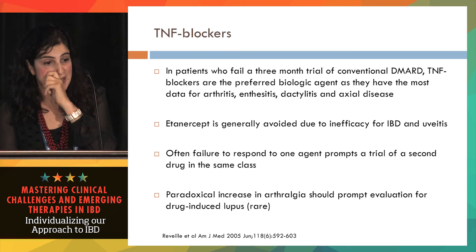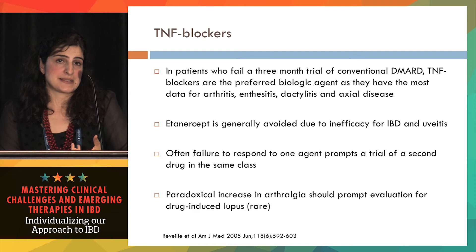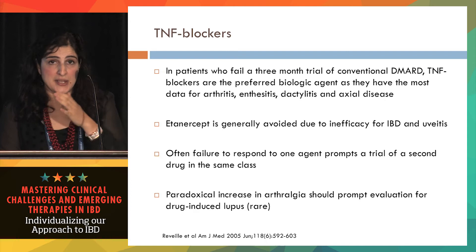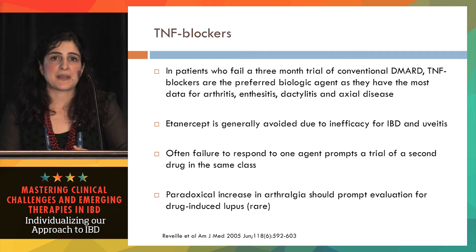What we like to use in patients with IBD arthropathy are TNF blockers, because we have the most positive data for these agents and they've been around for a long time. They're our go-to drug in axial disease and also have data for dactylitis, enthesitis, and arthritis — all the different domains showing good response rates in trials. We don't use etanercept in IBD because it doesn't seem to work for IBD, and it also doesn't work for uveitis, which we run across in patients with IBD and joint pain from time to time.